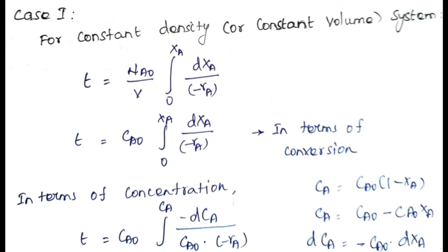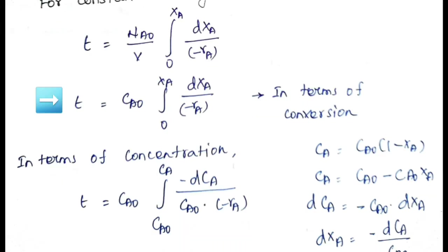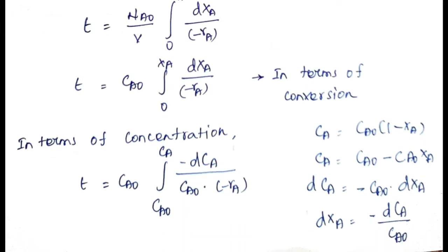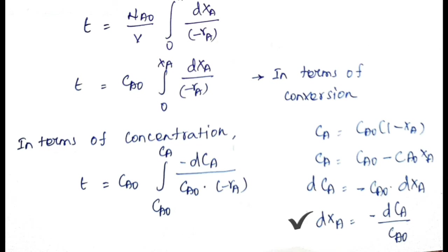We can also write this equation in terms of concentration. We know that CA = CA0·(1 − XA). Differentiating: dCA = −CA0·dXA, so dXA = −dCA/CA0. Substituting into the conversion-based equation, with limits changing from CA0 to CA, and canceling CA0 from numerator and denominator, the equation reduces to: t = −∫(CA0 to CA) dCA / (−rA).